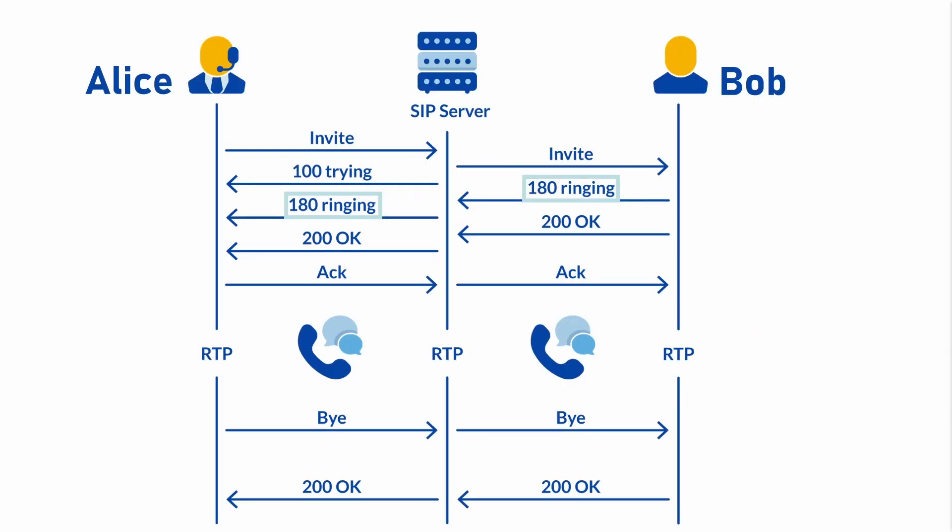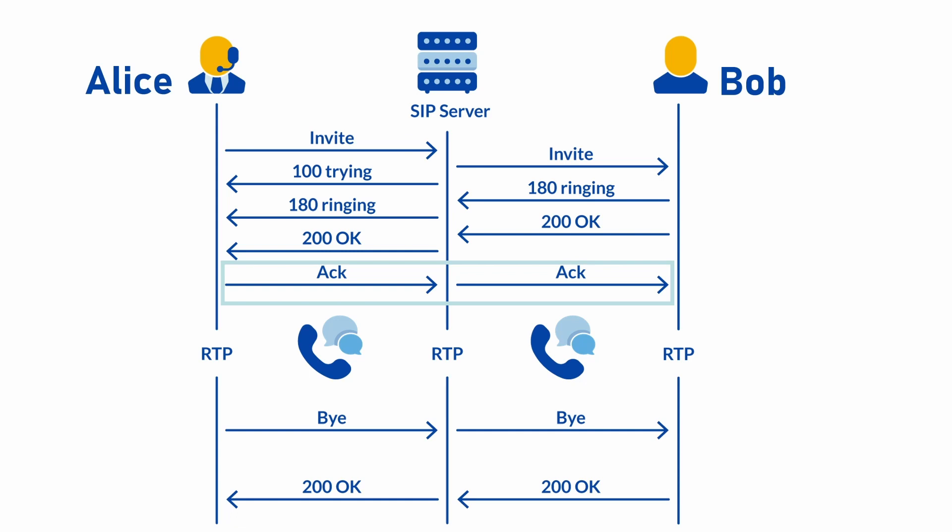Then Bob starts ringing and sends the response 180 Ringing to the SIP server. The SIP server will forward the response back to Alice. Bob picks up the phone and his telephone sends the response 200 OK. The body of the response contains an SDP message so that Alice knows where to send her RTP stream. The SIP server forwards the response to Alice. Alice confirms the receipt of 200 OK with the ACK message, and the SIP server forwards the ACK to Bob.